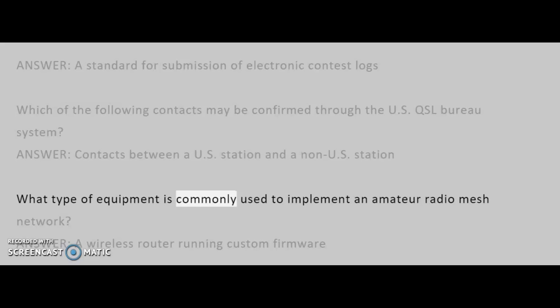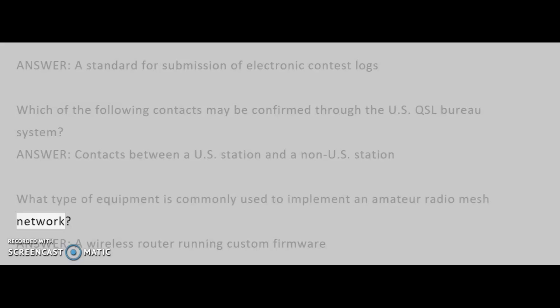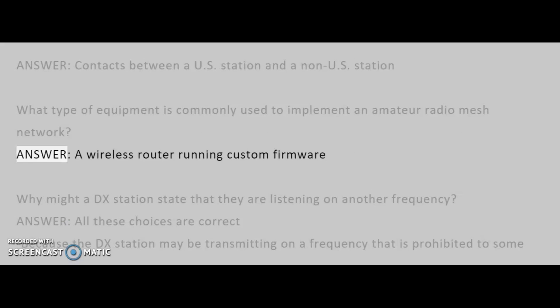What type of equipment is commonly used to implement an amateur radio mesh network? Answer: A wireless router running custom firmware.